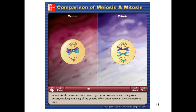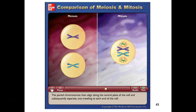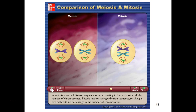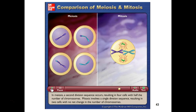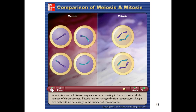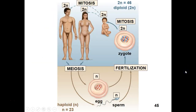Prior to meiosis or mitosis, DNA replication occurs. In both, the nuclear membrane breaks down as DNA organizes into chromosomes. In meiosis, chromosome pairs synapse and crossing over occurs, mixing genetic information. The paired chromosomes then align at the central plate and separate. Meiosis involves a second division sequence resulting in four cells with half the chromosome number, while mitosis involves a single division resulting in two cells with no net change in chromosome number.